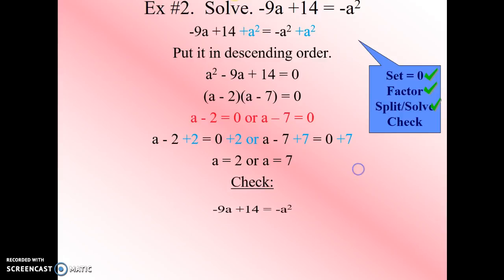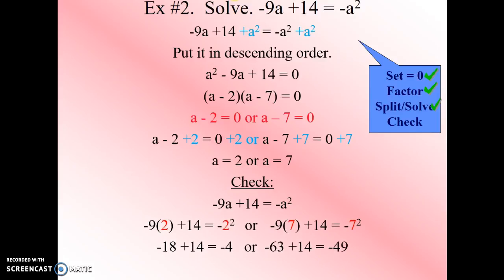Next, we want to check it. So we will substitute. And when we substitute and solve, we find out negative 18 plus 14 equals negative 4. That's true. Negative 63 plus 14 equals negative 49. That's also true. So our equation checks. So our solution set is, in fact, 2 comma 7.